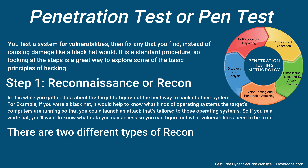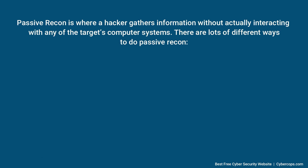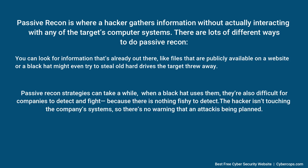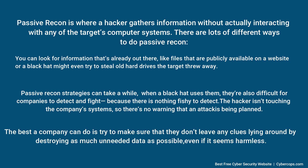There are two different types of recon: passive and active. Passive recon is where a hacker gathers information without actually interacting with any of the target's computer systems. You can look for information that's already out there, like files that are publicly available on a website, or a black hat might even try to steal old hard drives the target threw away. Passive recon strategies can take a while, but they're also difficult for companies to detect because the hacker isn't touching the company's system. The best a company can do is make sure they don't leave any clues lying around by destroying as much unneeded data as possible, even if it seems harmless.